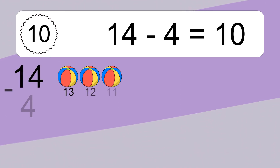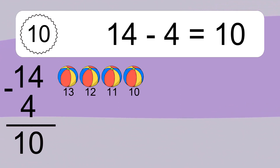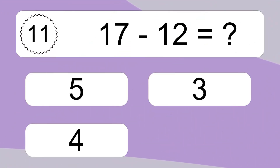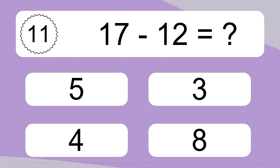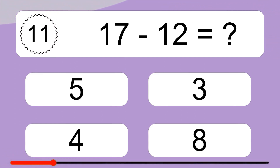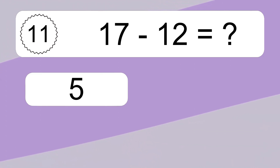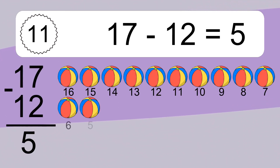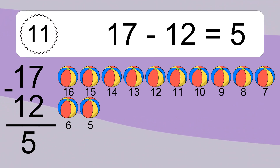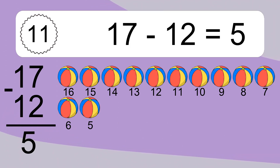14 minus 4 equals 10. Let's count it. 13, 12, 11, 10. 17 minus 12 equals what? 17 minus 12 equals 5. Let's count it. 16, 15, 14, 13, 12, 11, 10, 9, 8, 7, 6, 5.